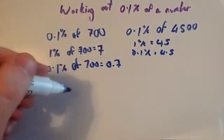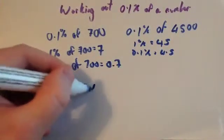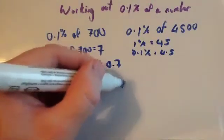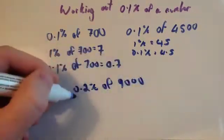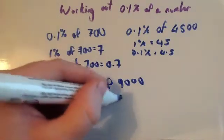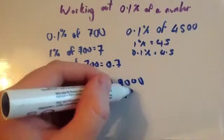Let's just quickly do another one. What about this? 0.2% of 9,000. So get 1% first of all. So 1% of 9,000 divided by 100, take off two zeros, is going to be 90.